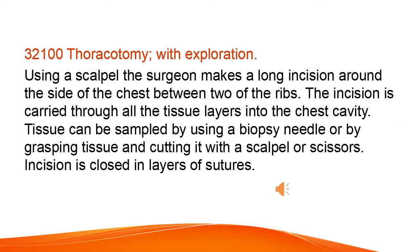Thoracotomy with exploration. Using a scalpel, the surgeon makes a long incision around the side of the chest between two of the ribs. The incision is carried through all the tissue layers into the chest cavity. Tissue can be sampled using a biopsy needle or by grasping and cutting with a scalpel or scissors. The incision is closed in layers of sutures.